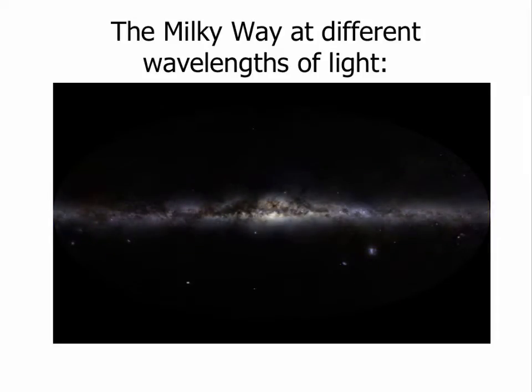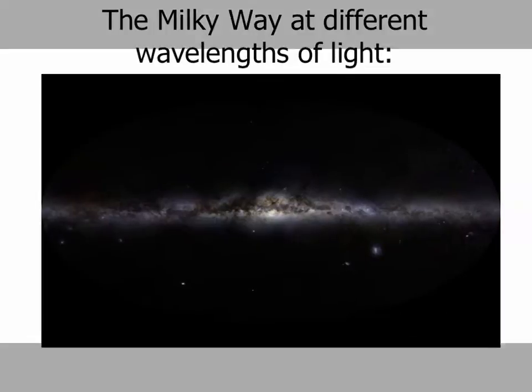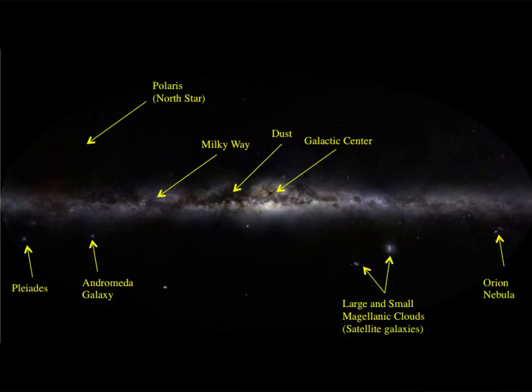Let's point out some of the features that we can see in the Milky Way. Because we've centered this picture on the Milky Way itself, the North Star is not at the top. The North Star is actually off to the upper left and you can't see it on this image — it is there, but you can't see it.